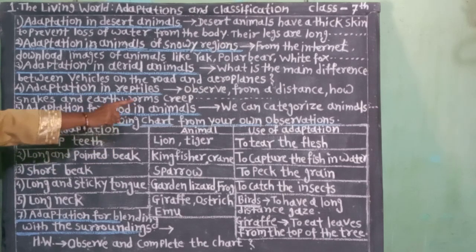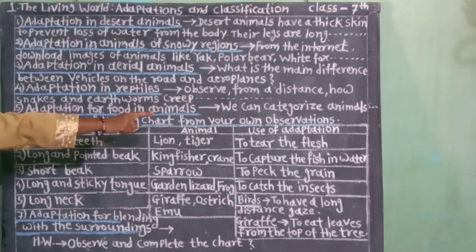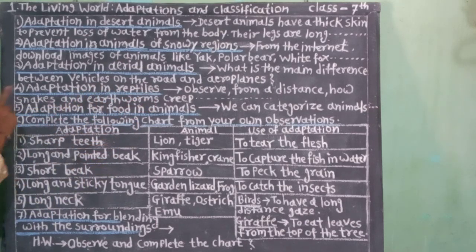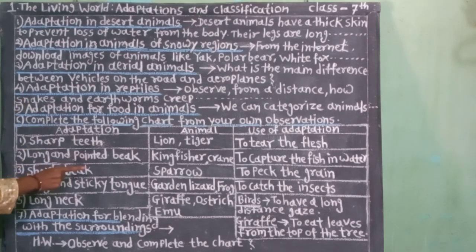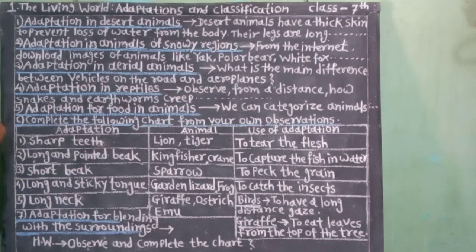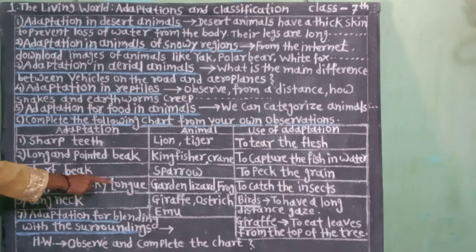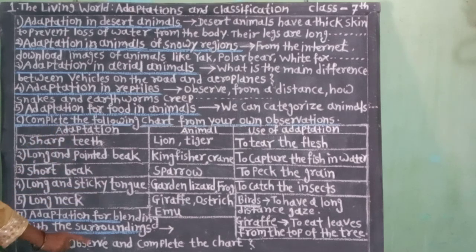We can categorize animals as herbivorous and carnivorous. Special adaptations are seen in each category to make the process of feeding easy. We will discuss this in greater detail in the chapter on nutrition.